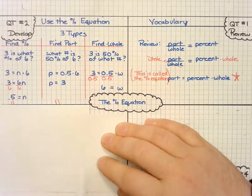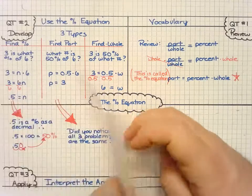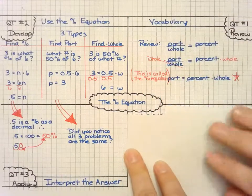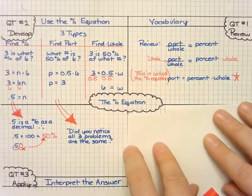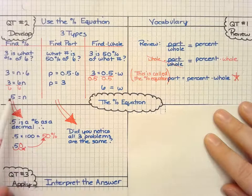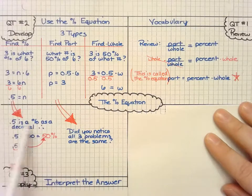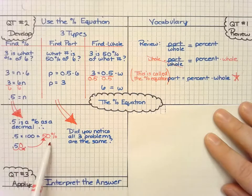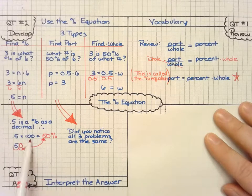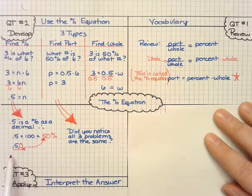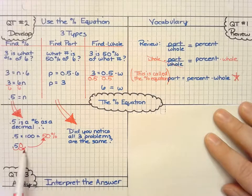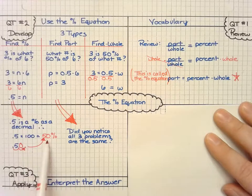Which leads us into quick tip number three, and this is just to interpret the answer. And so remember that 0.5 is our percentage, so we can convert it back into a percentage. So 0.5, we have two powers of ten, or 100, so we can move that decimal place over two place values, and that shows us that we have 50%.